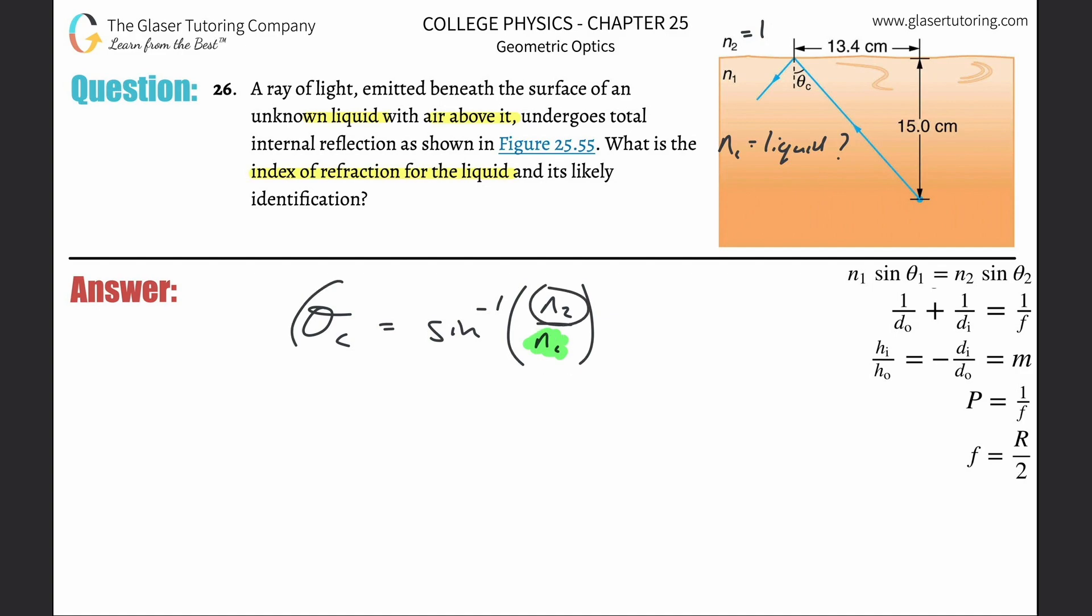To find n1, I need to know two things: the critical angle and the n2 value. I do know n2, that's simply the air value. But what I don't know at the moment is the critical angle. They gave me the angle in the picture and enough information to solve it.